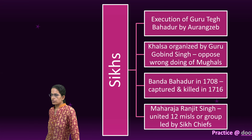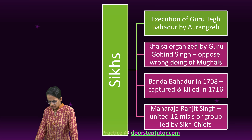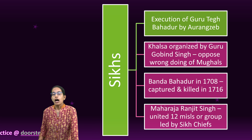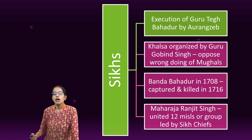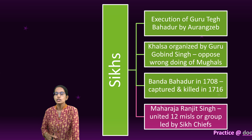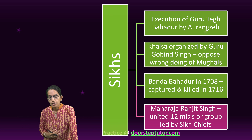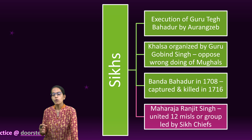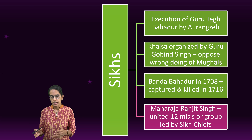The next important contribution is by the Sikhs. Sikhs were against the Mughals after the execution of Guru Tegh Bahadur by Aurangzeb. After this, Guru Gobind Singh organized the Khalsa to oppose the wrongdoings of the Mughals. Later on, Banda Bahadur came to power in 1708. However, he was continuously tortured and finally captured and killed in 1716.